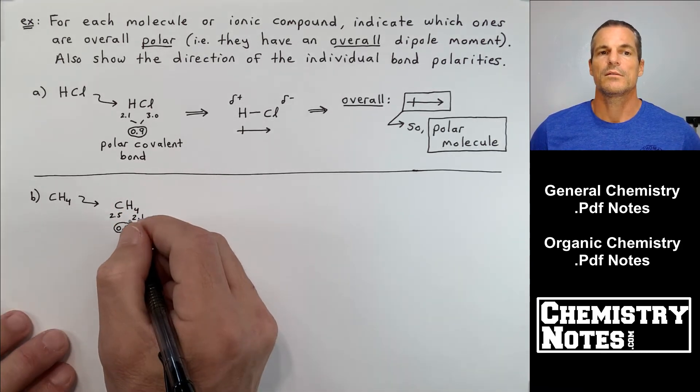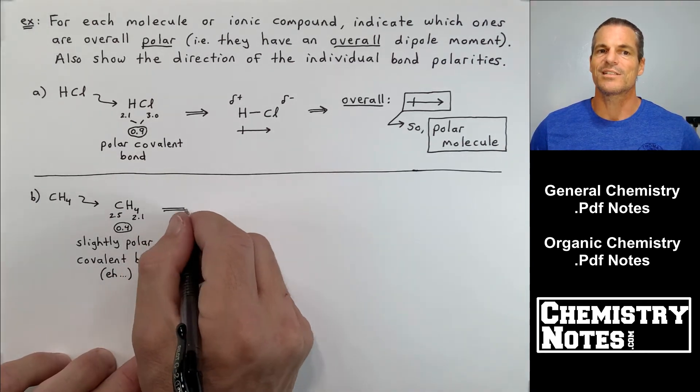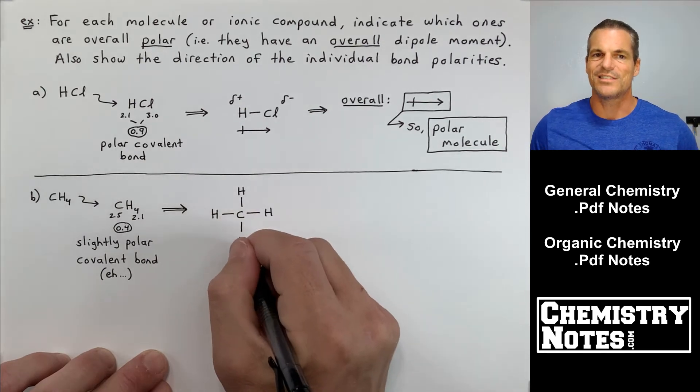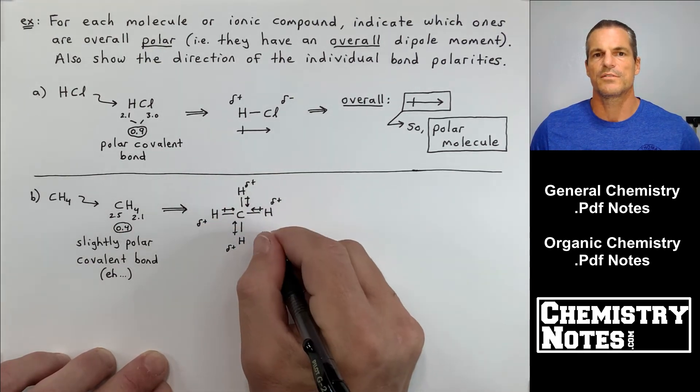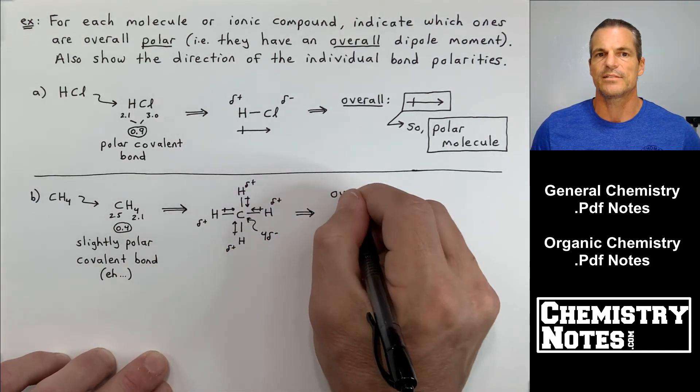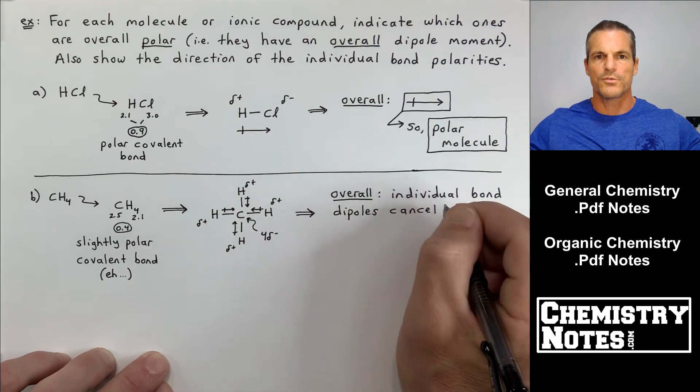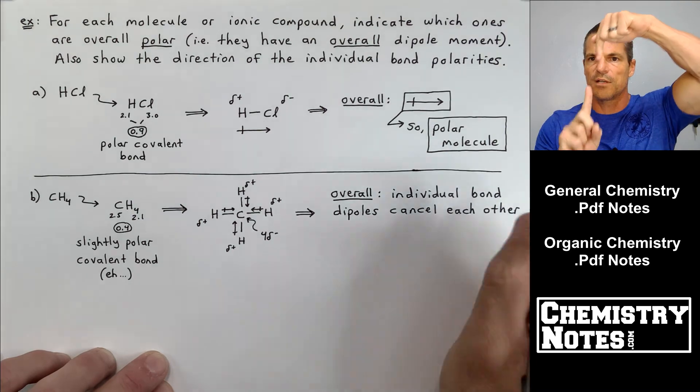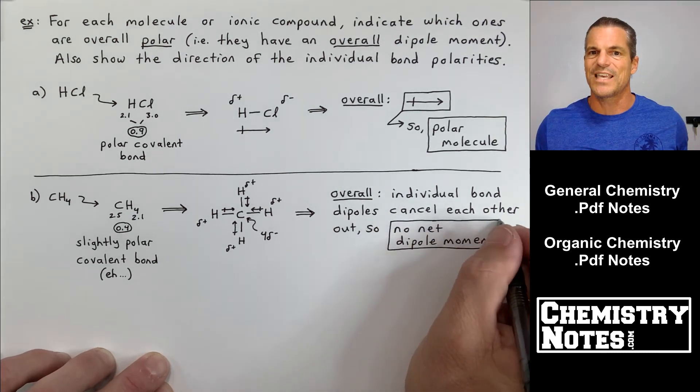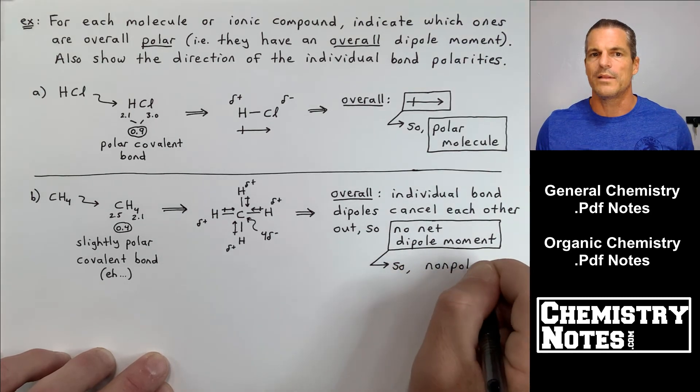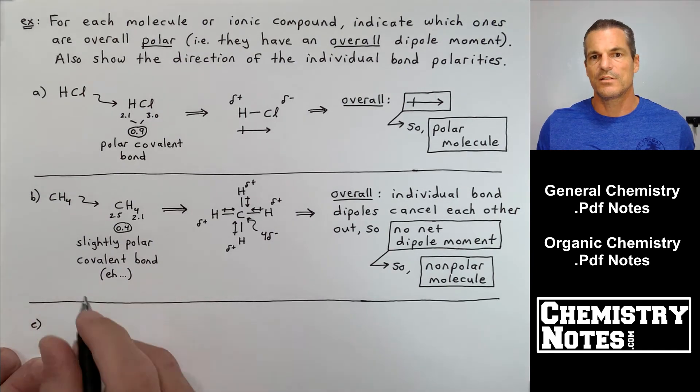Now CH4, carbon electronegativity value is 2.5, hydrogen electronegativity value is 2.1. So the difference is 0.4. According to the chart, this is a slightly polar covalent bond. But in reality, C-H bonds are essentially non-polar. Now we're going to talk more on how to draw structures later on in the course. It looks like two dipole moments are canceling each other. The two horizontal dipole moments are both going in. They cancel each other out. So overall, the individual bond dipoles cancel each other out. I'm unable to draw a dipole moment overall for this molecule. So this is a non-polar molecule.